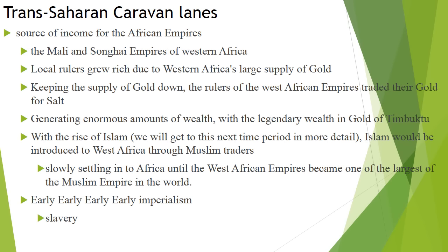Later on, post-600 CE — just beyond our time period — Islam will come into the region through Egypt and the Arabian Peninsula, then work its way counterclockwise through Africa. Islam is first introduced through fighting, but that's not a workable system, so it gets in through trade — Muslim traders — and then slowly settles into Africa.